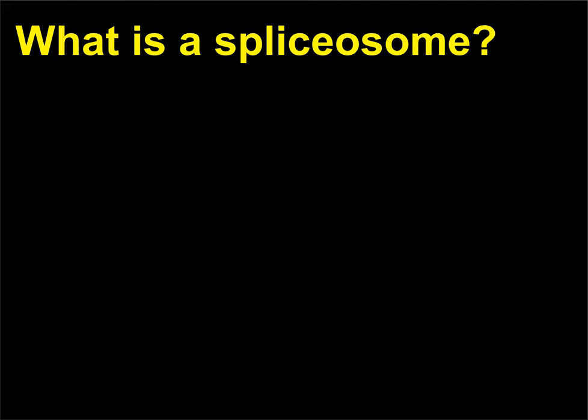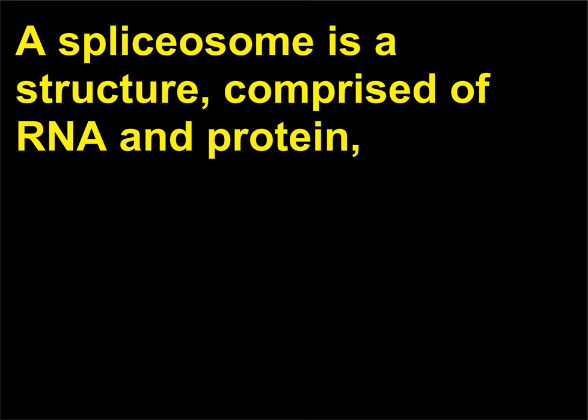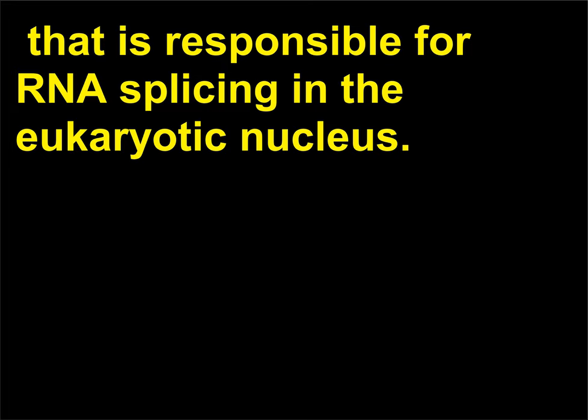What is a spliceosome? A spliceosome is a structure comprised of RNA and protein that is responsible for RNA splicing in the eukaryotic nucleus.